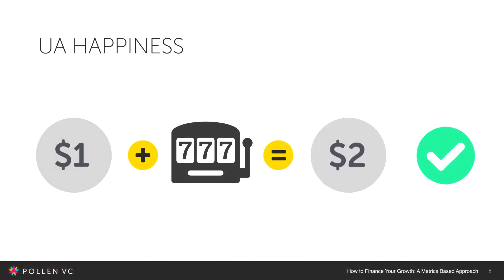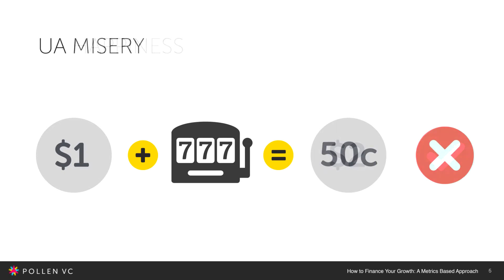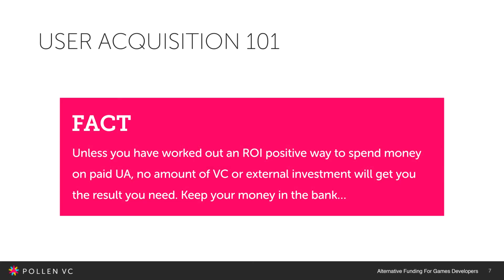You put a dollar into UA, you get more than a dollar back — result, happiness. You put a dollar into UA, you get less than a dollar back — result, misery. Really simple, obvious facts. Unless you've figured out a way to spend profitably, just don't spend at all. Just keep figuring it out.